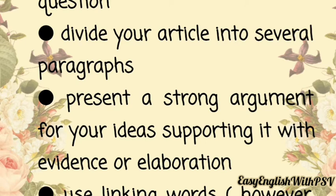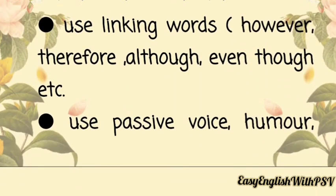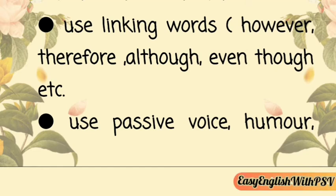Support your ideas with evidence or elaboration. Use linking words — for example: however, therefore, although, even though. Such words can be used for making the sentences attractive. Next, use passive voice. An article is written in the third person, so it is a third-person account. You are supposed to write in the third person, using passive and formal language.